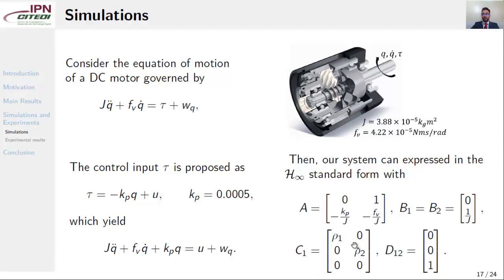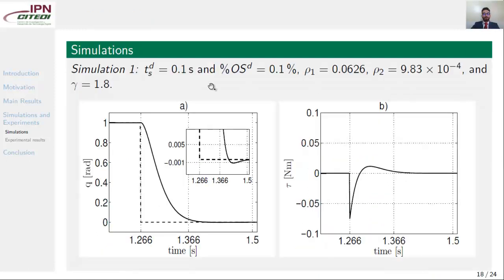The first simulation, we would like to get a settling time of 0.1 second and an overshoot of 0.1 percent. Applying the methodology, we get rho1, rho2, and gamma. And figure A shows the step time response. We start at one radian and we want the system goes to the origin. Notice here that the settling time is 0.1 second and the percent overshoot is 0.1. So we achieved what we were looking for. Here we show the control input necessary to get this result.